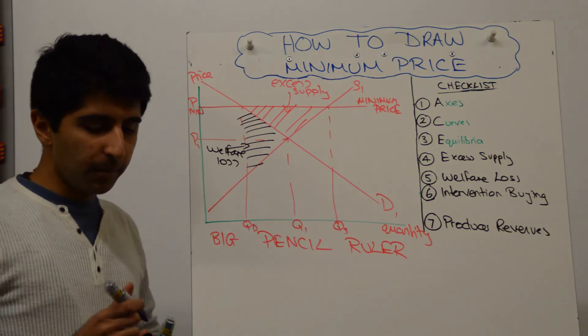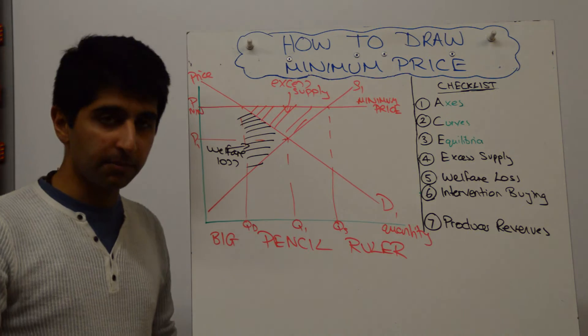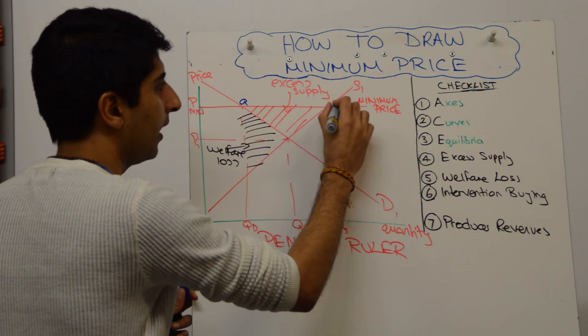If this is a primary commodity market, we want to show how this excess supply will then lead to intervention buying. To do so, it's worth labeling certain points. So I'm going to label this A and that B.